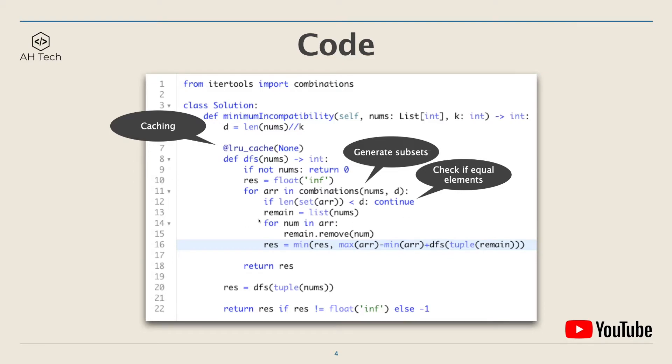Then create a remain array and loop through every number in the arr subset, removing every element from the remain array. Finally, update res by taking the minimum of res and the maximum minus minimum of arr plus the recursive DFS call. It will be more clear to visualize this process step by step.